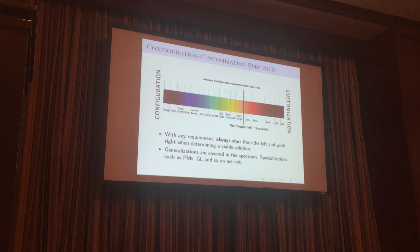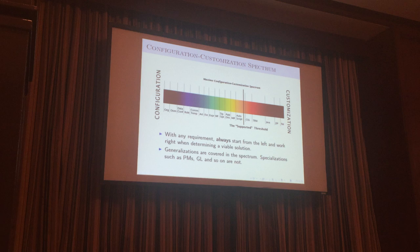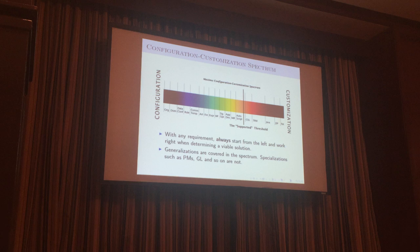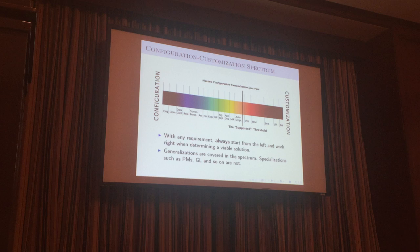The first step I came up with to communicate this is the configuration-customization spectrum. You want to start on the left-hand side and stay there. These are all generalizations covered on the spectrum. Specializations — like PMs — are configurable and useful but specialized, used for specific things. The general concepts on the spectrum can be used to get any kind of work from Maximo.